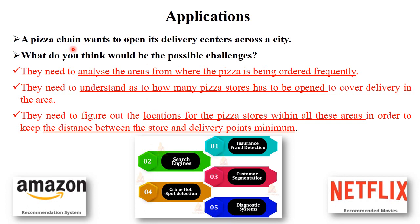Let's take an example. Suppose a pizza chain wants to open a delivery center across a city. What would be the possible challenges? First, they need to analyze the area where pizza is ordered frequently, and only open the delivery shop there. Second, they need to understand how many pizza stores are needed in a particular area. Third, they identify the particular location where delivery to each location is easy or at minimum distance. They find out the centroid of that particular area, and this is how K-means can be used in real life.